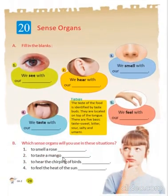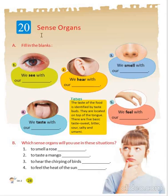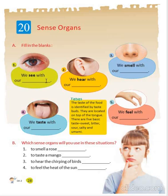Now come to Chapter 20, Sense Organs. We have 5 sense organs: eyes, nose, ears, tongue, and skin. We see with our eyes. We hear with our ears. We smell with our nose. We taste with our tongue. We feel with our skin.